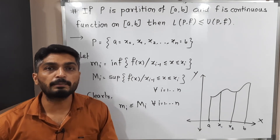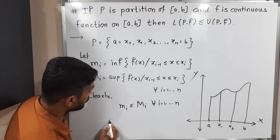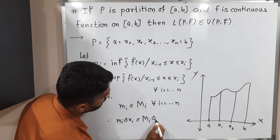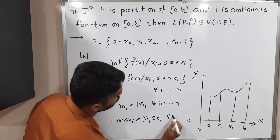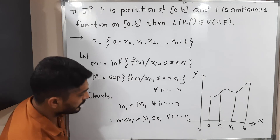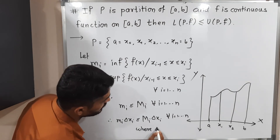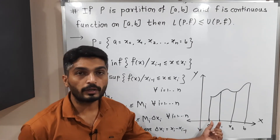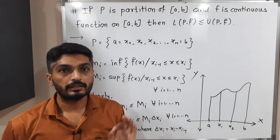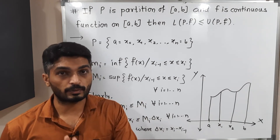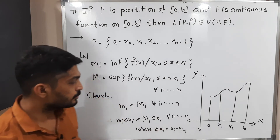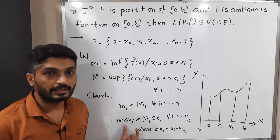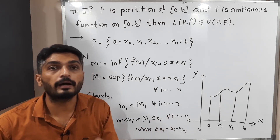After that, I will multiply both sides by Δxi. Therefore, mi · Δxi ≤ Mi · Δxi, and this is again true for all i running from 1 to n. You know that Δxi = x_i − x_{i−1}. So Δx1 = x1 − x0, Δx2 = x2 − x1, and so on. Obviously, Δxi is a positive value, so we are multiplying both sides of the inequality by Δxi and we get this result.